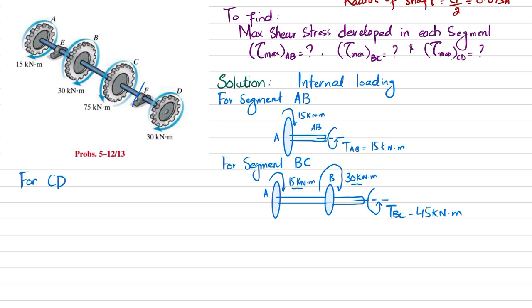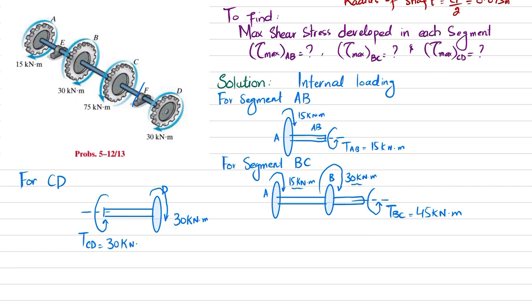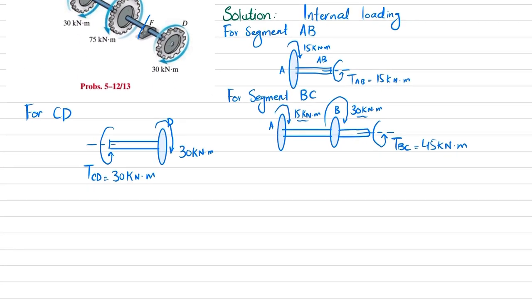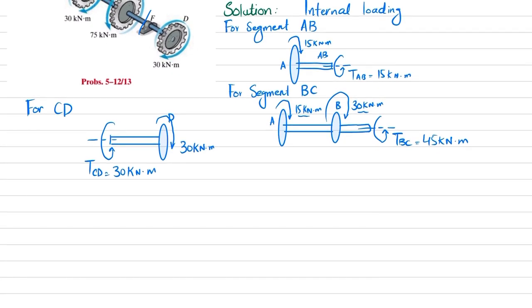Now for segment CD. I will cut it here and show the shaft. We have a gear at point D with a moment of 30 kilo-newton meters applied. To keep it in balance, we need a torque along the shaft axis, so T_CD equals 30 kilo-newton meters. Now we have all three segment torques and will find the maximum shear stress in each.